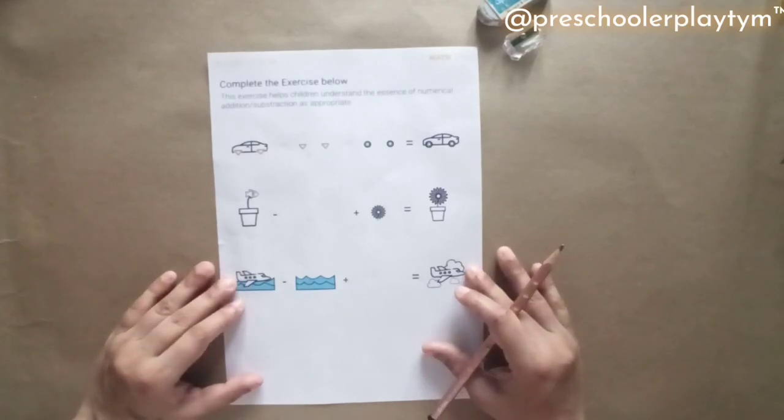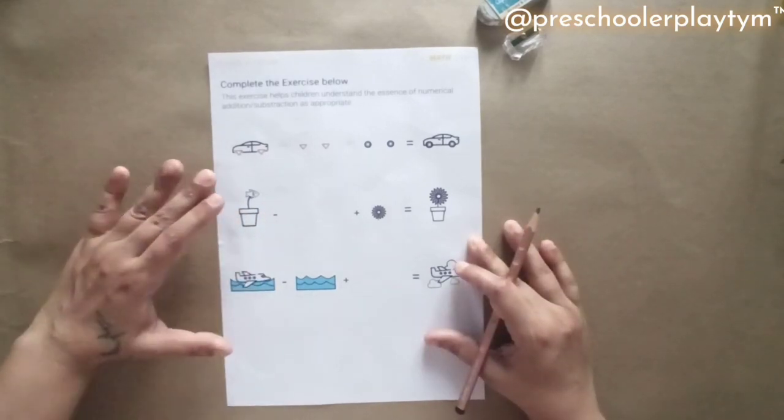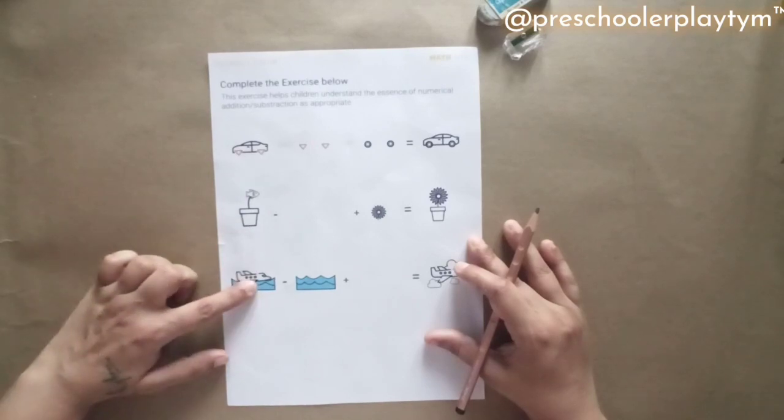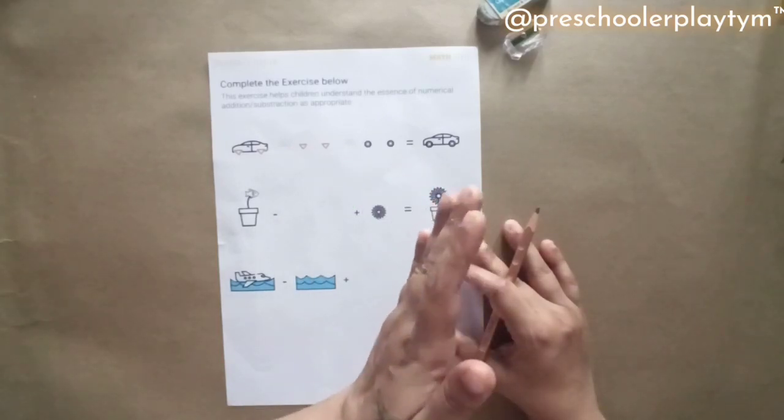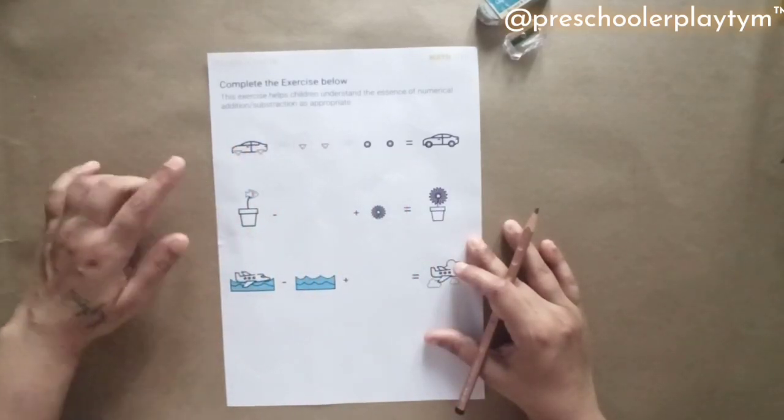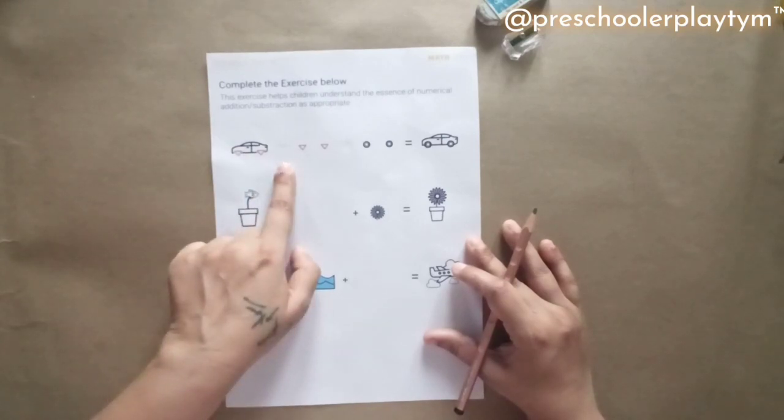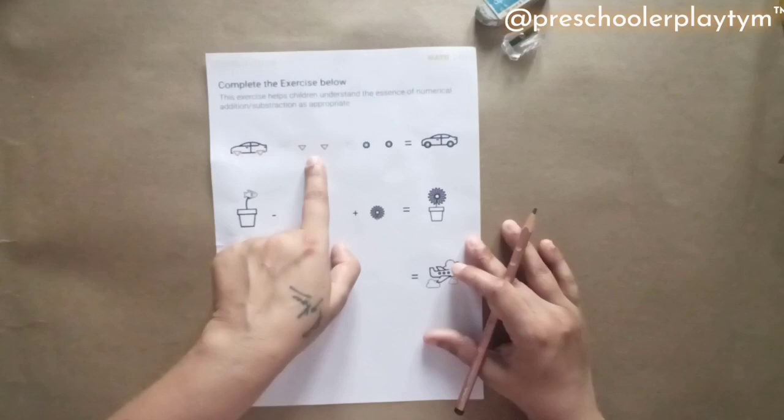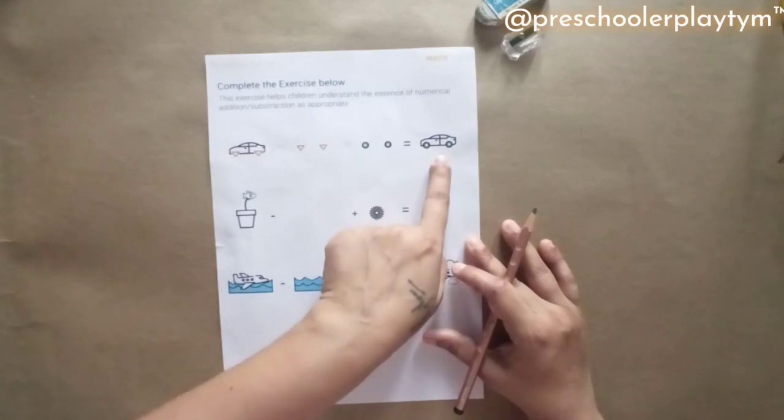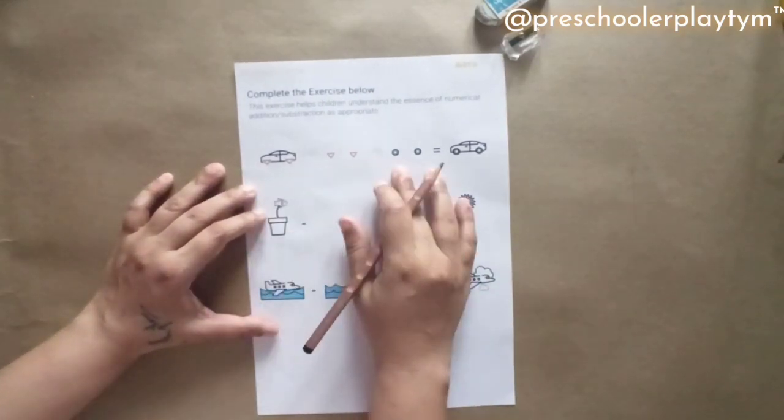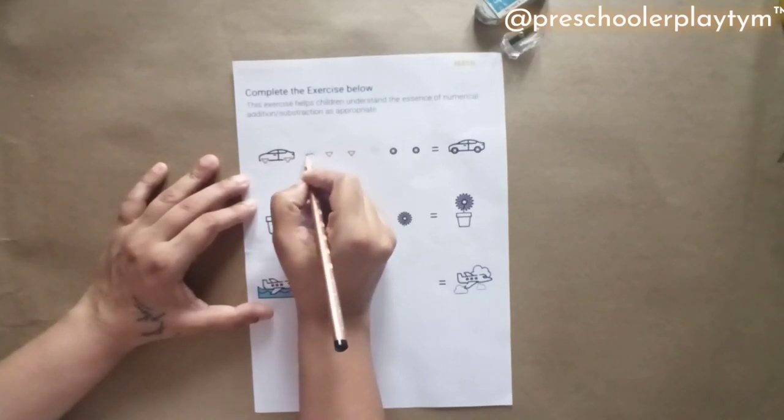So now the final sheet here talks about both addition and subtraction. The surprising part about this sheet is all these questions have something odd that needs to be removed and something has to be added. So let's start with the first question here, where you see a car with a triangle. There's a blank here. That means there's a symbol supposed to come here with these two triangles here, plus again a symbol and a symbol and two circles giving us a full car. So that means the child has to understand what has to be subtracted and added to give us a full car.